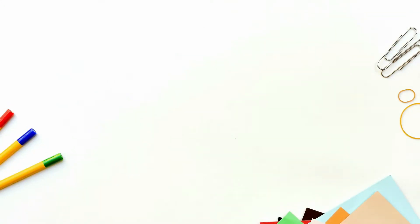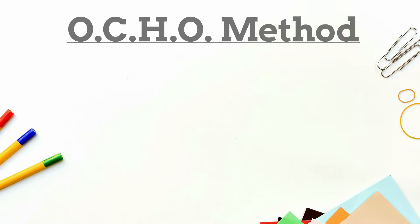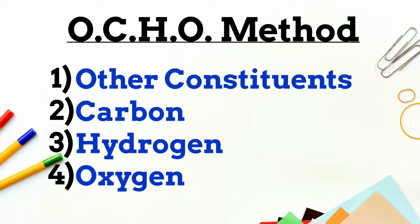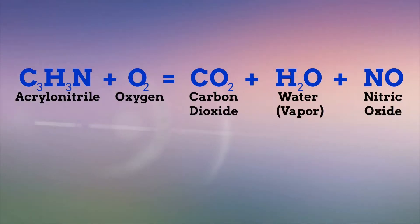There are various methods we can use to balance this chemical equation. The method we'll use today is what I call the OCHO method. OCHO is an acronym short for Other Constituents, Carbon, Hydrogen, and Oxygen. This order essentially tells you which atoms to balance first. This is one of the more difficult combustion equations to balance, but let's do it.